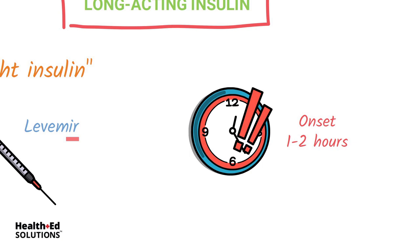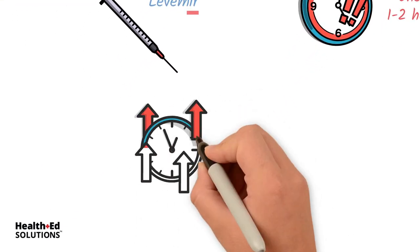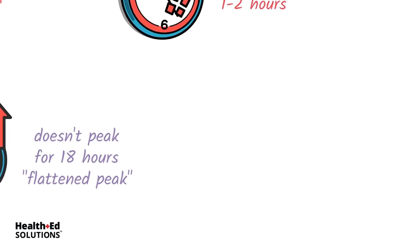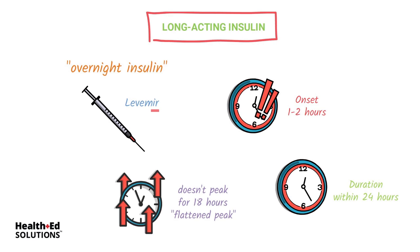The big differences between insulins are the peak and duration. Within one to two hours, Levemir, or Detemir, is working. It doesn't peak for 18 hours, and then within about 24 hours it is out of the patient's system. So long acting Levemir: onset one to two hours, peak at 18 hours, duration 24 hours — out of the patient's system.